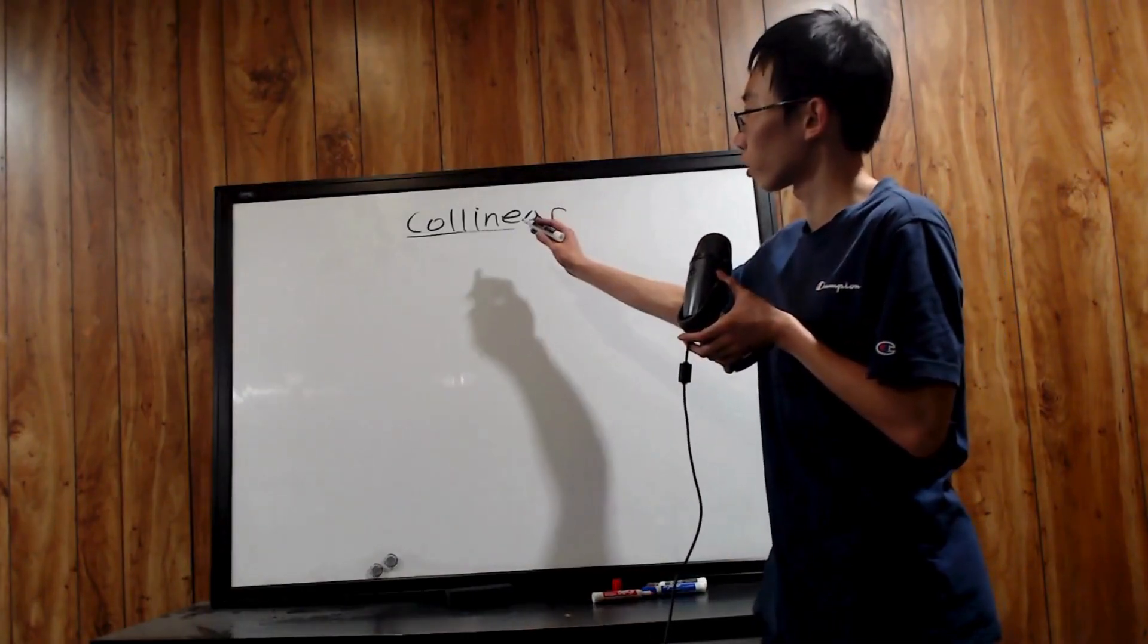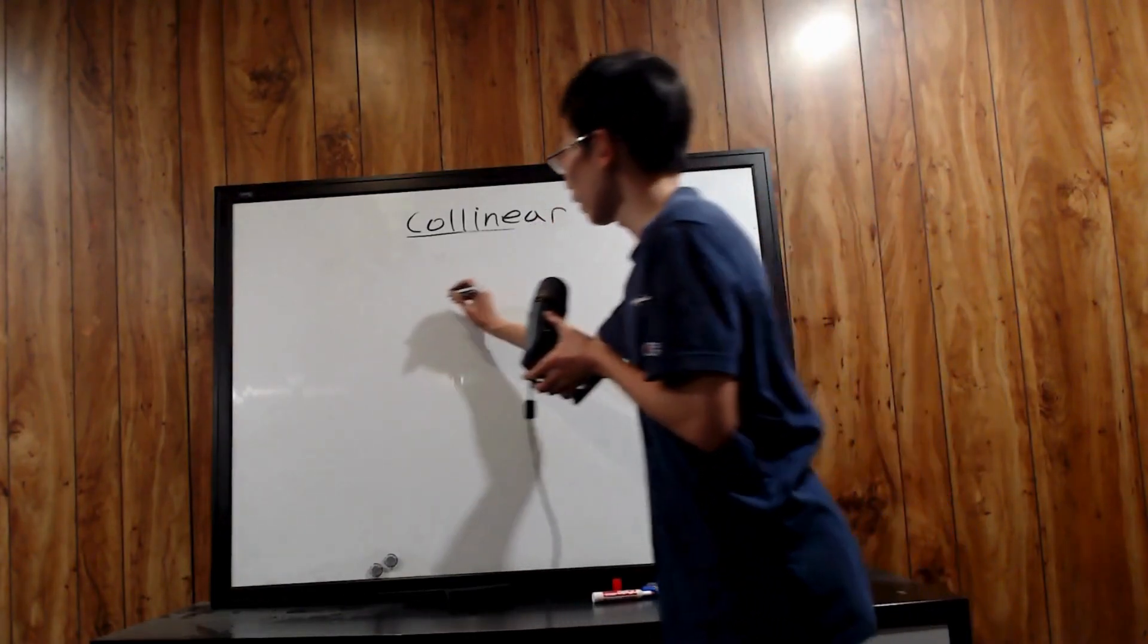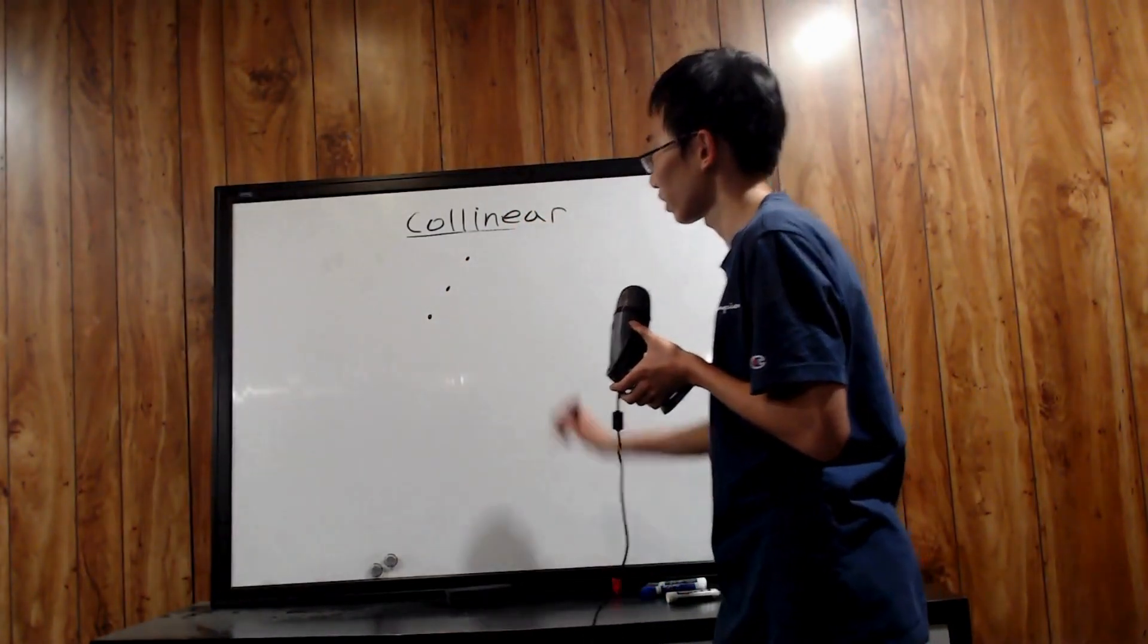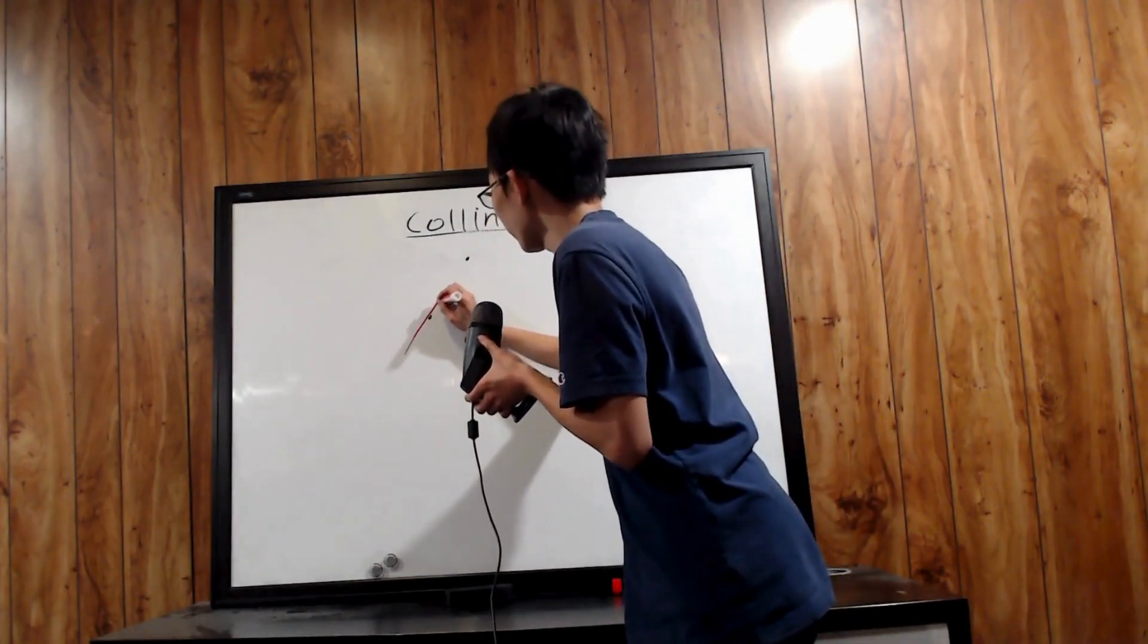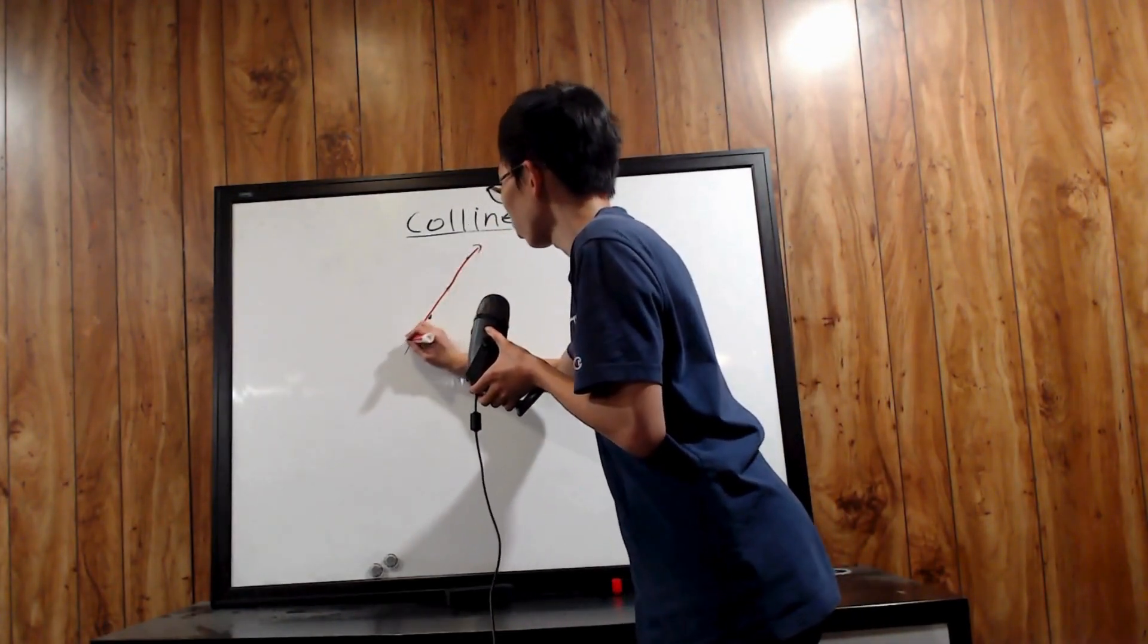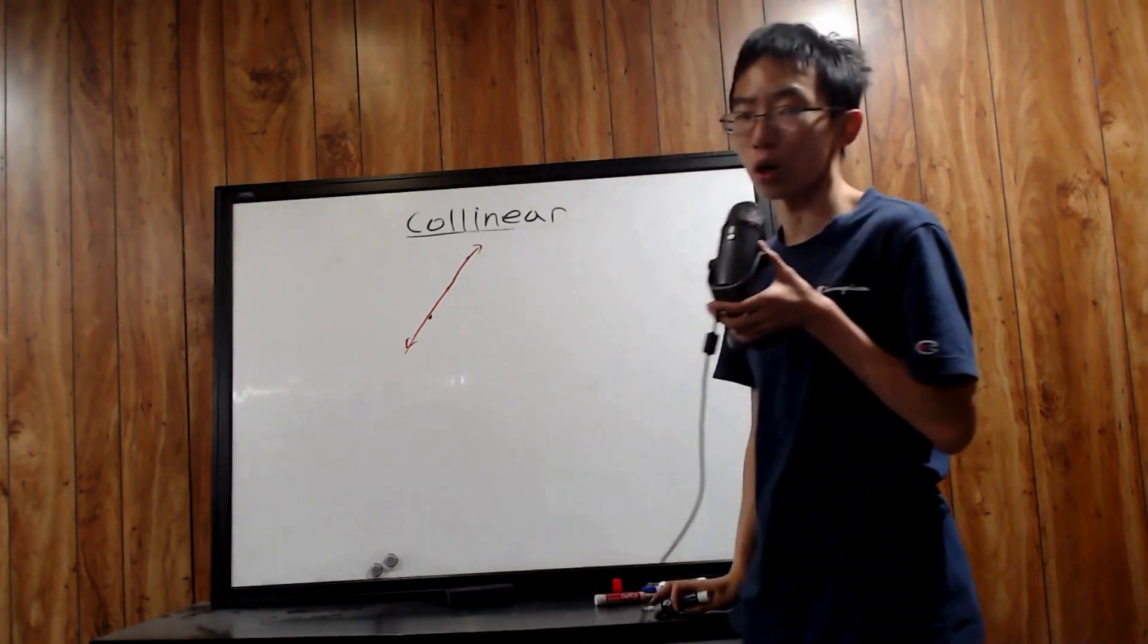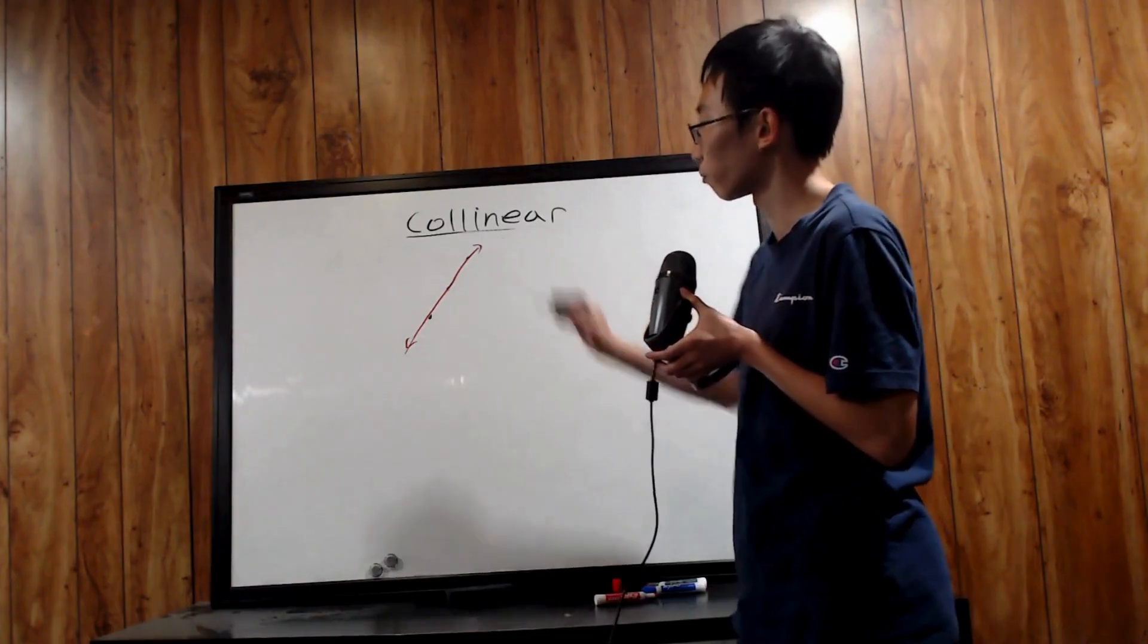You might be familiar with this word, collinear. If I gave you a set of random three points, and it turns out that you're able to draw a perfectly straight line connecting all three points, then these three points are what we call collinear. They lie on the same line.